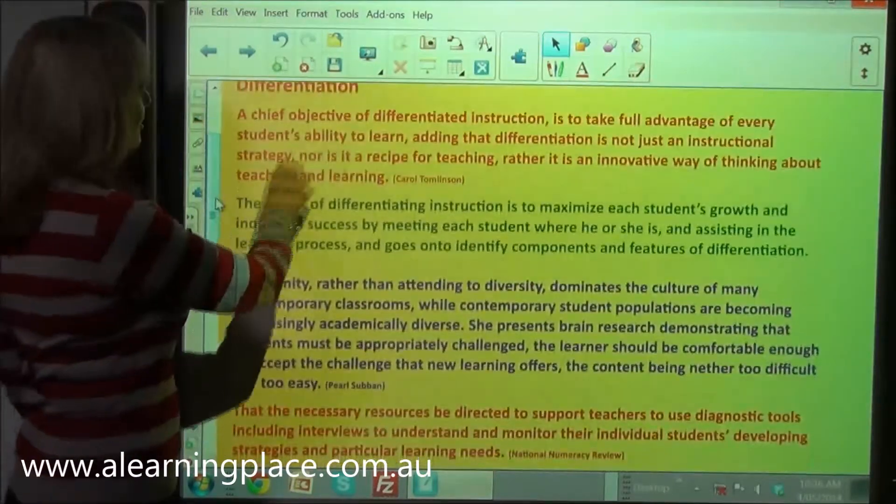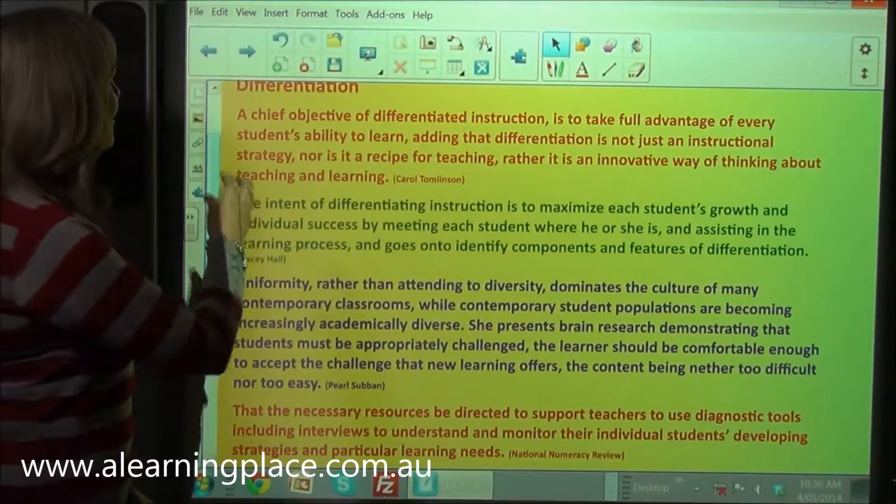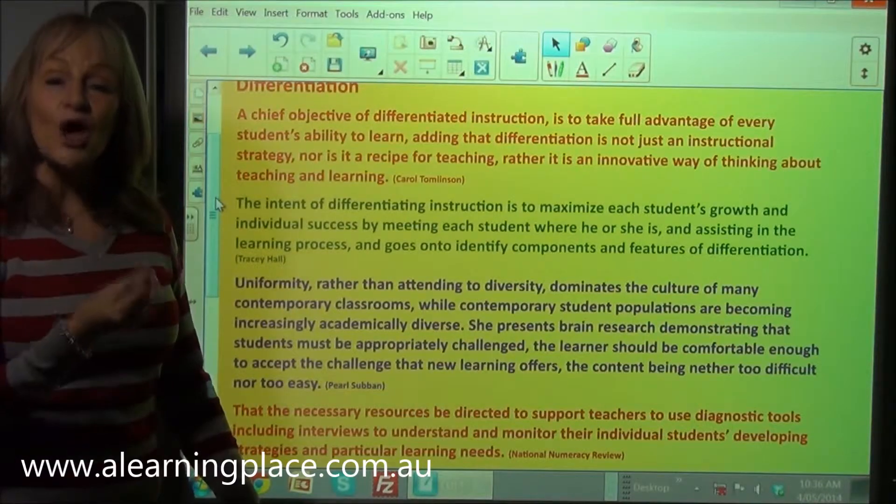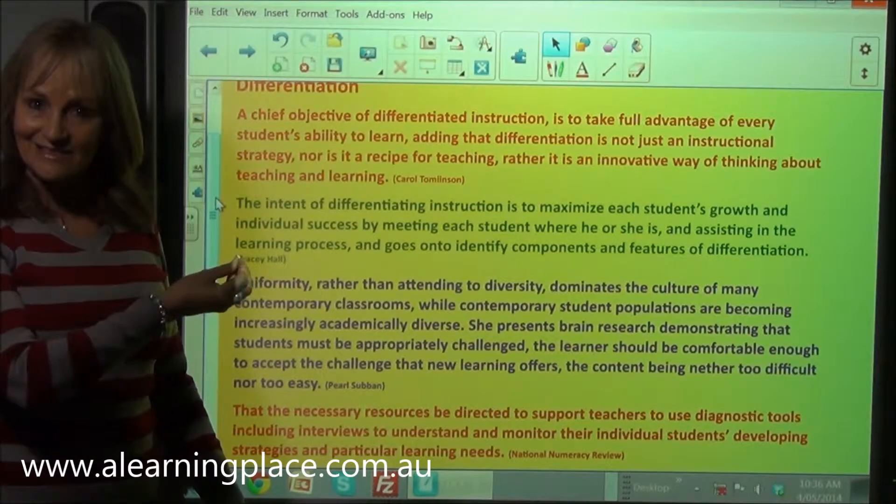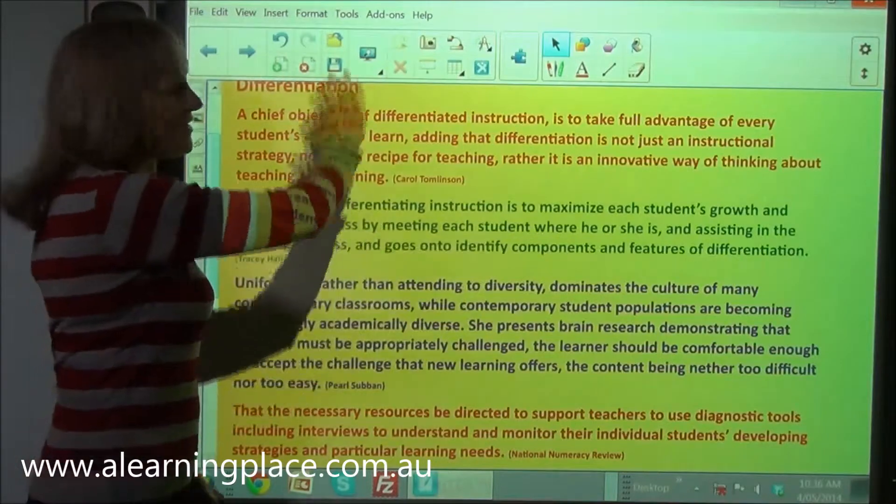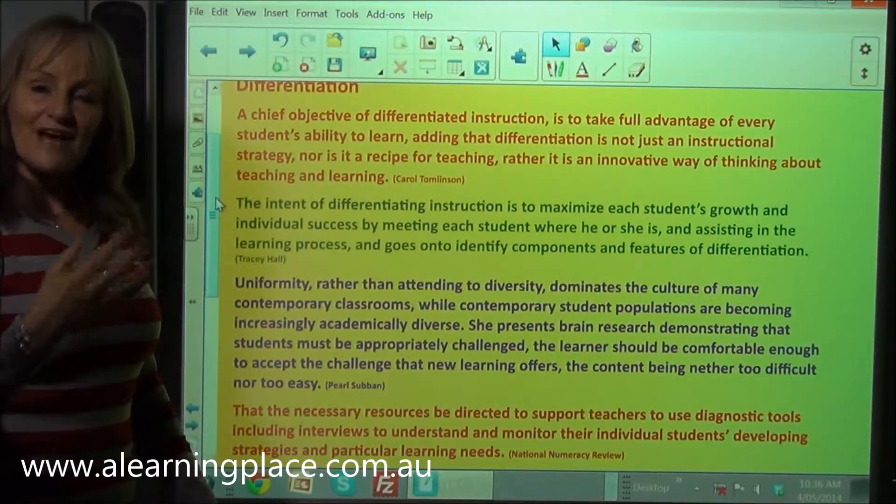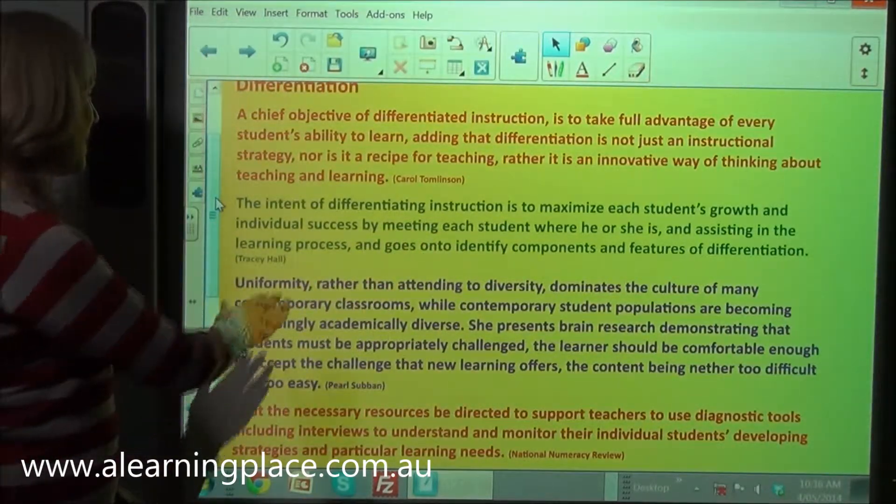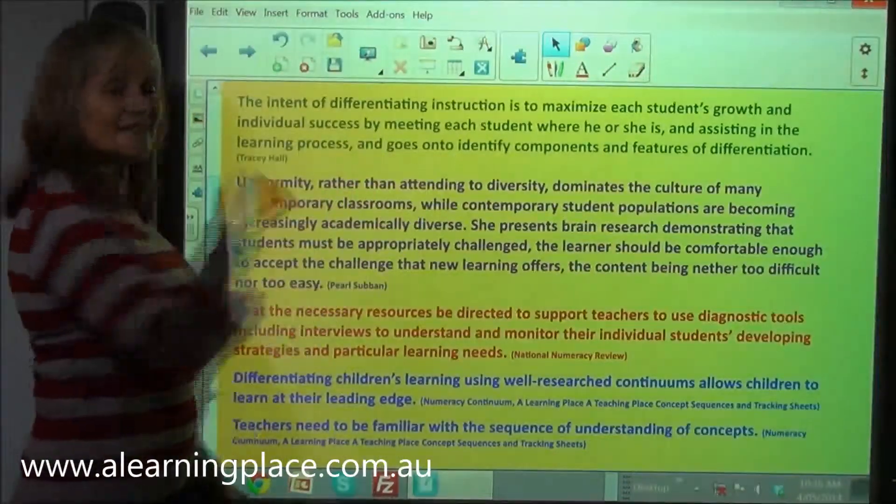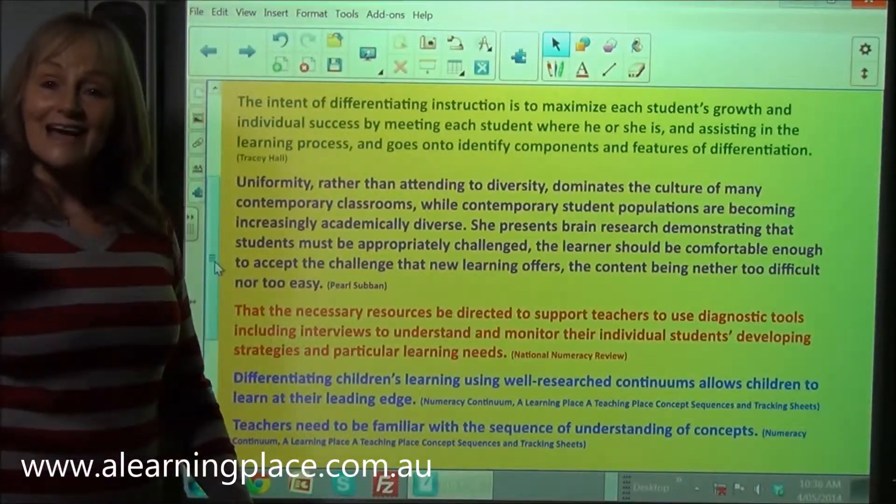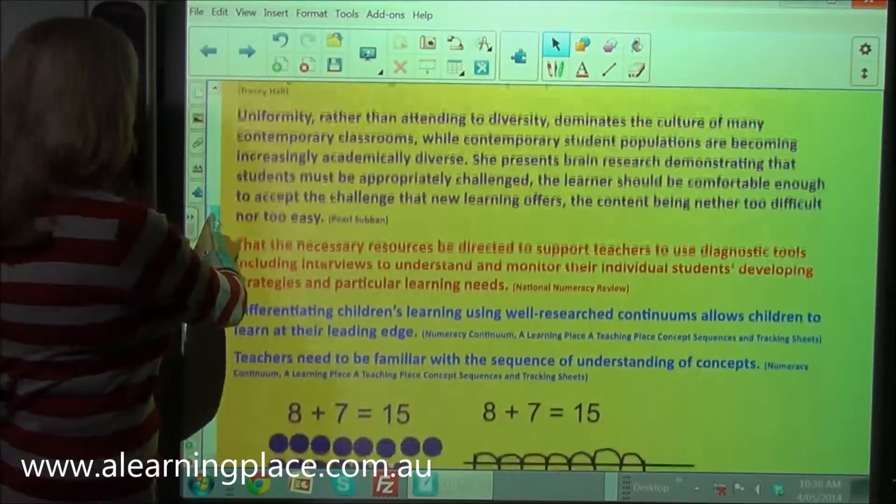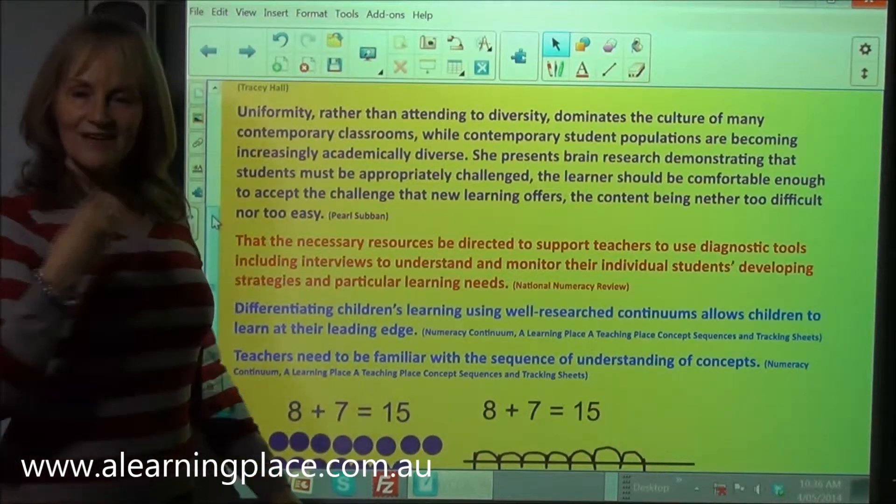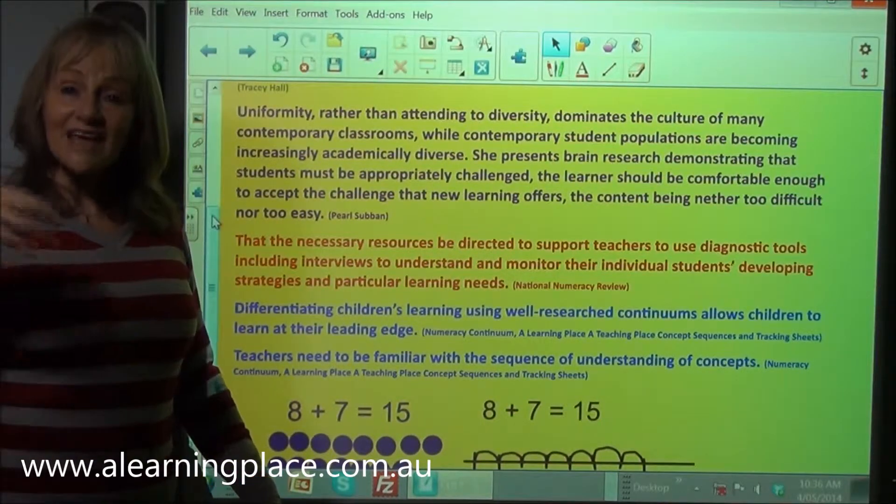So what is differentiation? Carol Tomlinson talks about the objective of differentiation is to take advantage of what every child already knows and understands and to lead them on from there to the next level of understanding. It's to maximize each student's growth and individual success by meeting the child where they currently are. Now it seems that over time the culture of teaching has meant that uniformity has been dominating many classrooms rather than diversity.